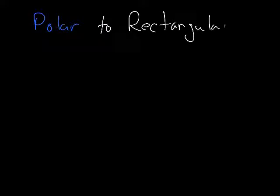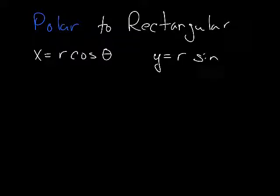We want to talk about polar to rectangular. X is R cosine of theta, Y is R sine of theta.